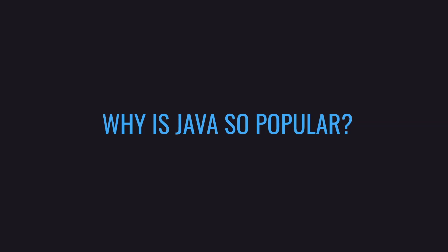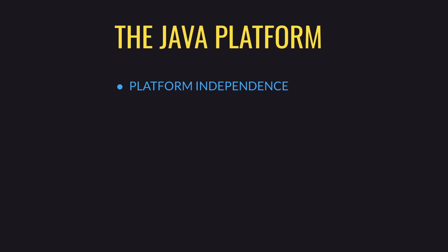So if everybody's using it and Java's so popular, why is it so popular? There are a few reasons. First up is platform independence. Java has this idea called Write Once, Run Anywhere, which means you can write a program once for one machine - for example on Windows - and then run it on all different machines: a Linux machine, a Mac, a Unix server, or wherever else. You don't have to rewrite the same software for each different machine type. If I write an application on Windows, I can release it on Mac and Linux without having to reprogram the whole application.